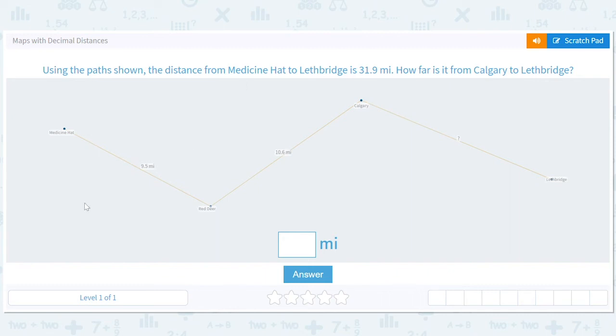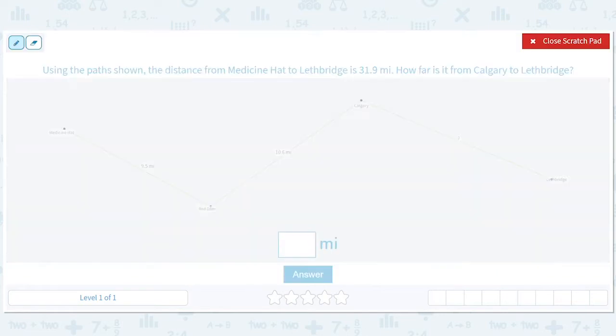Maps with decimal distances. How fun! The thing to remember here is that by distance we mean you have to walk along the road. You're not allowed to fly. That's not legal.